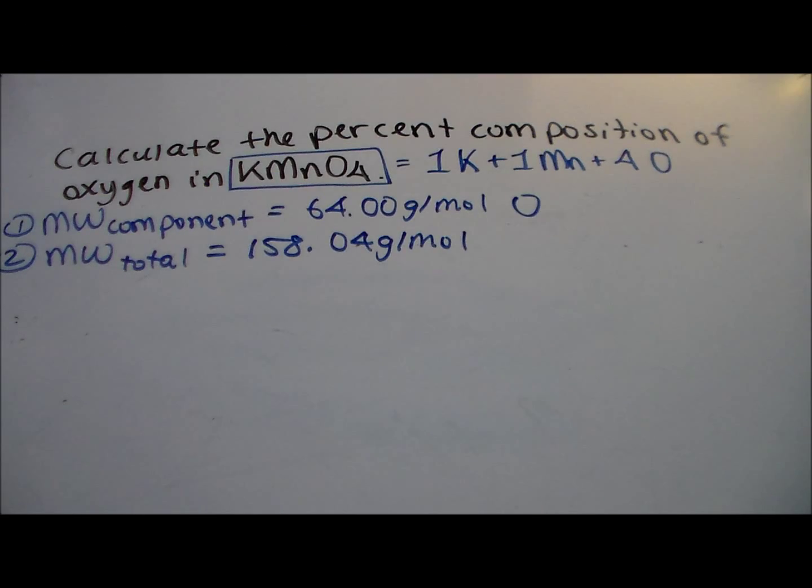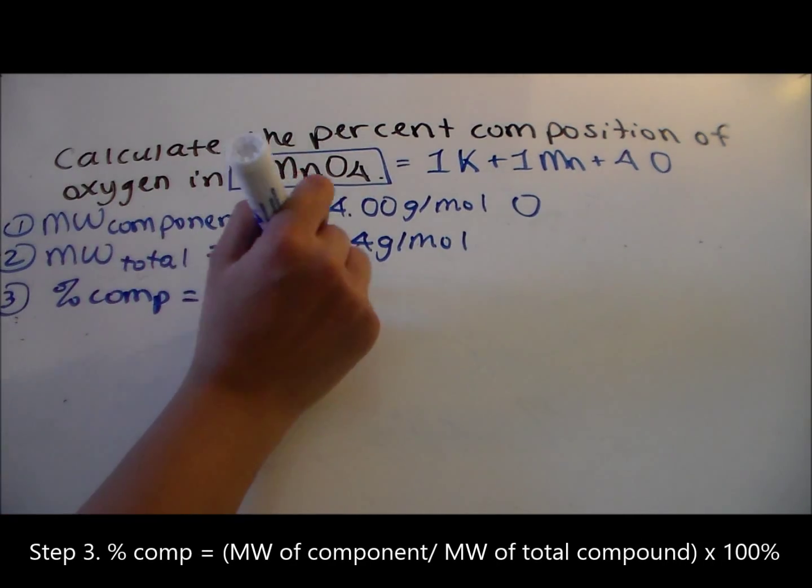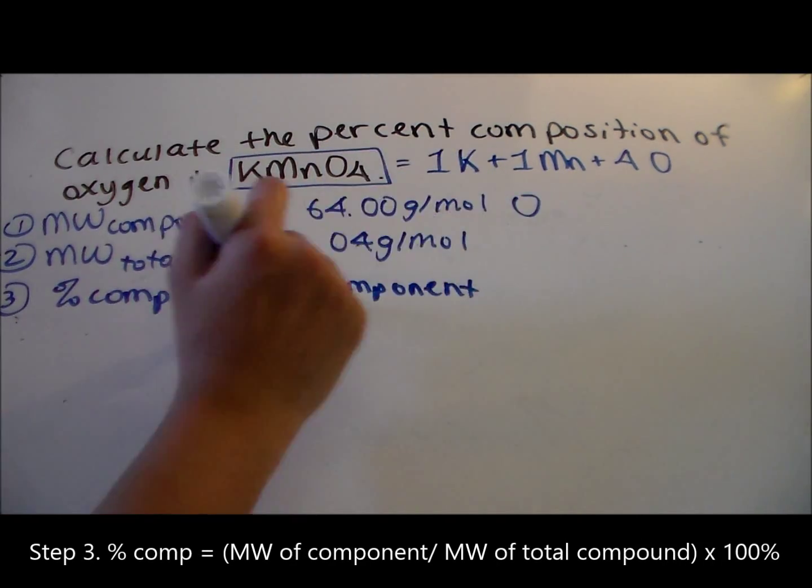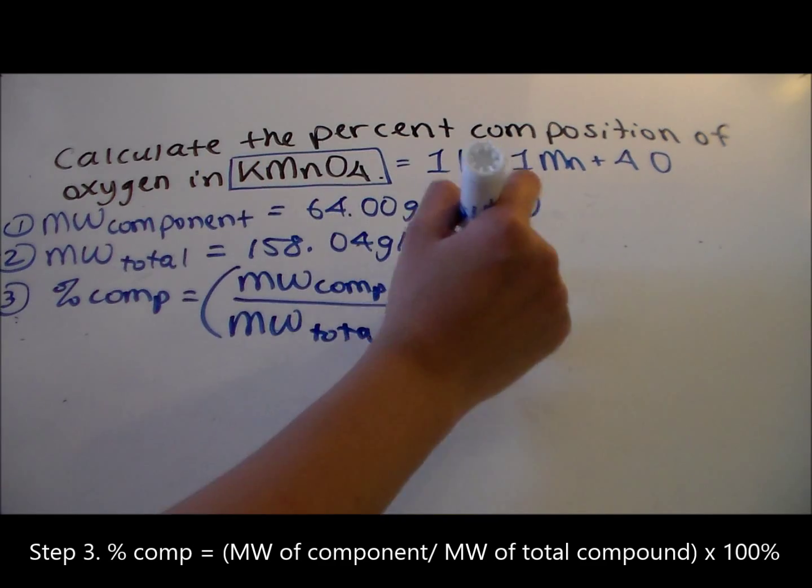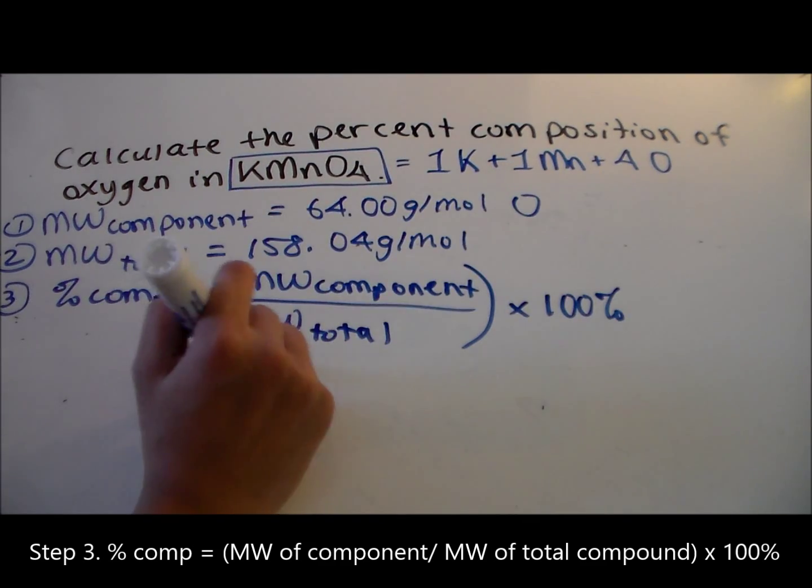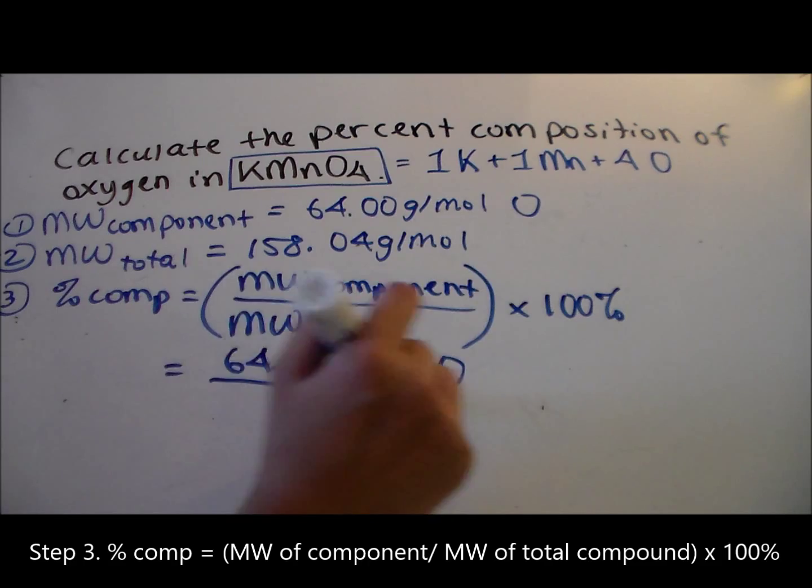The third step is to divide the value in step one by step two and convert the decimal to a percentage. The percent composition of oxygen equals the molecular weight of the component, which is oxygen, divided by the total molecular weight of the compound, KMnO4, then multiply by 100%.